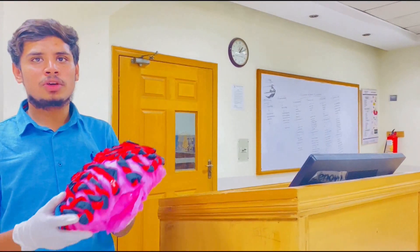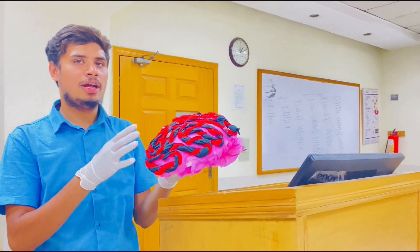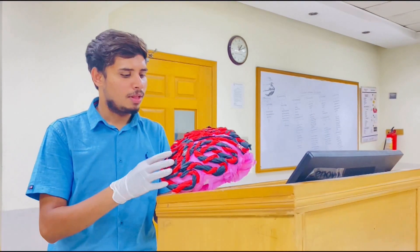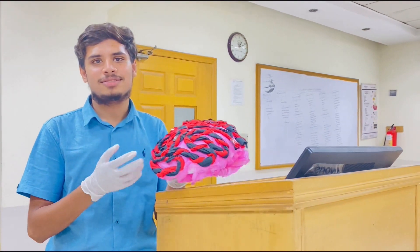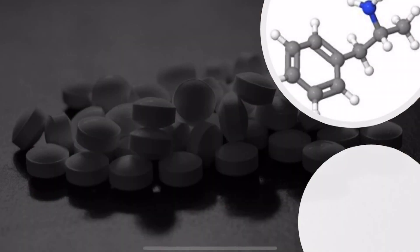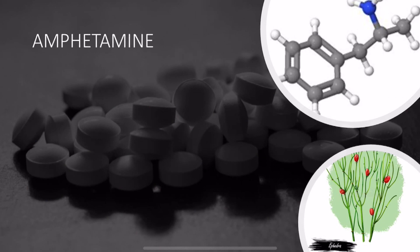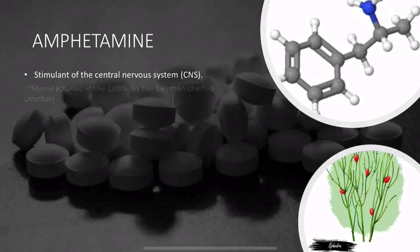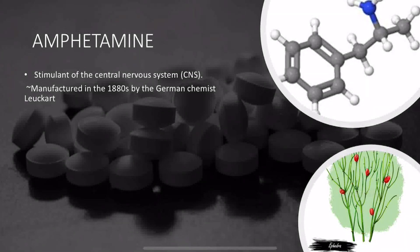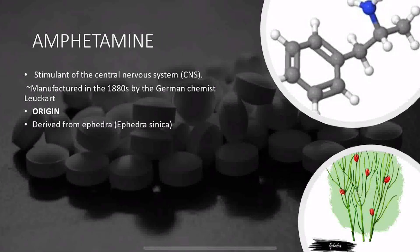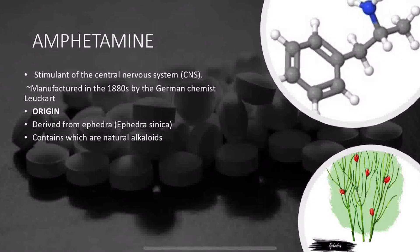Amphetamine is a CNS stimulant. It is a synthetic substance which acts as a stimulant of the central nervous system, first manufactured in the 1880s by German chemist Leucart. They are derived from Ephedra sinica, which is native to China and Mongolia. The plant contains ephedrine and pseudoephedrine.